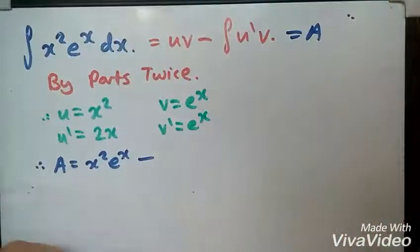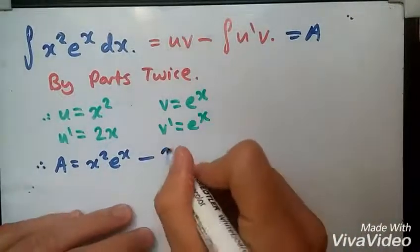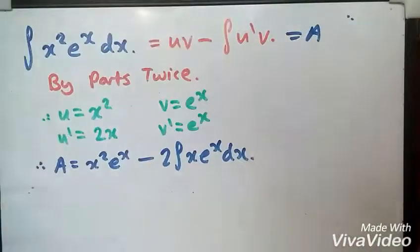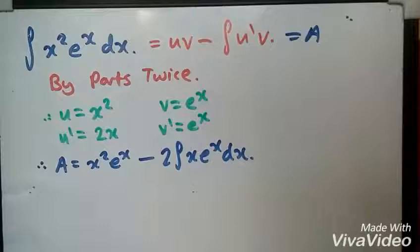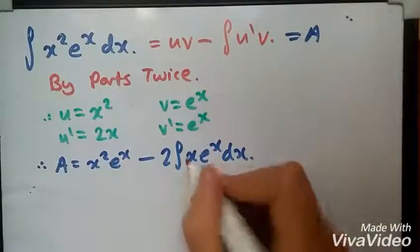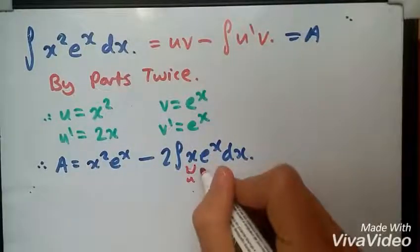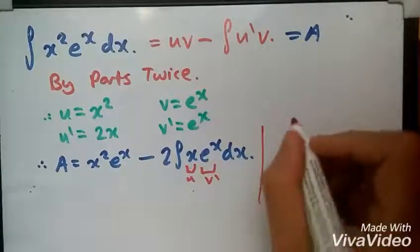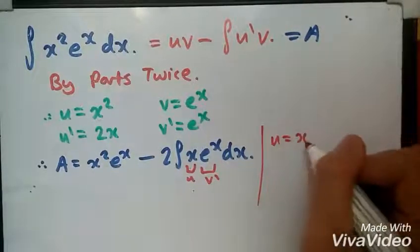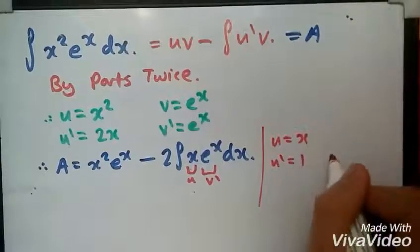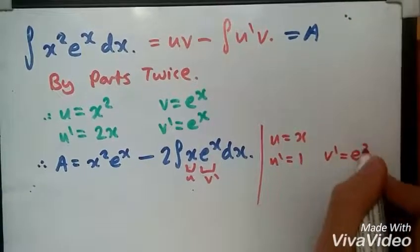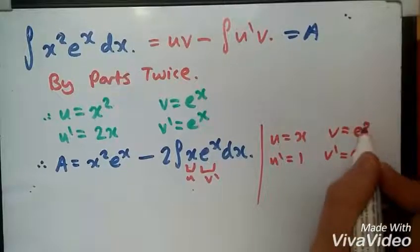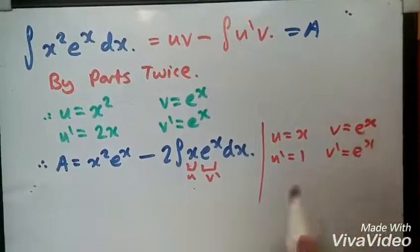We're going to have 2 times the integral of x e^x dx. Once again pick a u and pick a v prime. I'll follow the previous one: let this be u and this be v prime. So u equals x, u prime equals 1, and v prime is e^x. Like the previous one, integrating this will still leave you with e^x.